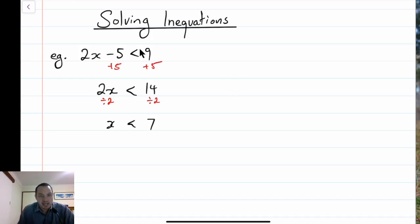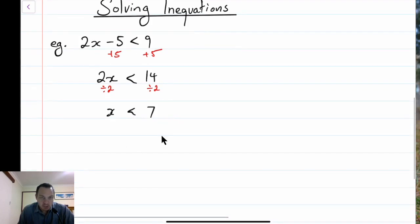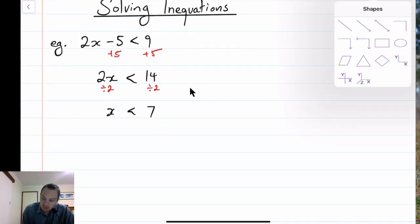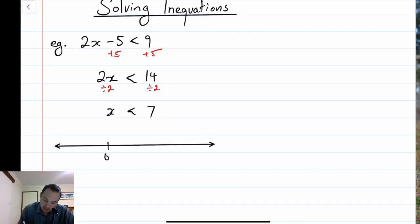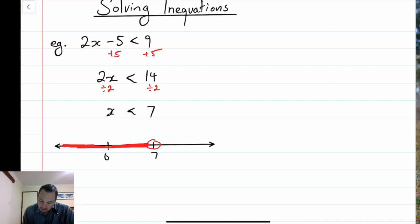This is how we would normally solve that. The question would ask you to graph it on the number line. Here's my 0, here's my 7 - x is less than 7, so it goes through like that, and it can't be 7, it's less than 7.